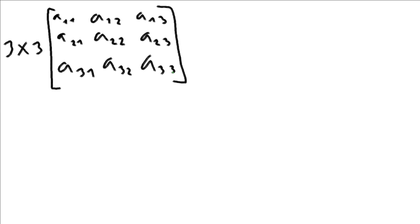So for our three by three matrix we look for products of three entries such that all three are individually from a different column and a different row at the same time. This is similar to what is done with the two by two matrix determinant rule — one takes products of entries not from the same column and not from the same row — but we also need to keep in mind a minus rule, which we will address shortly.